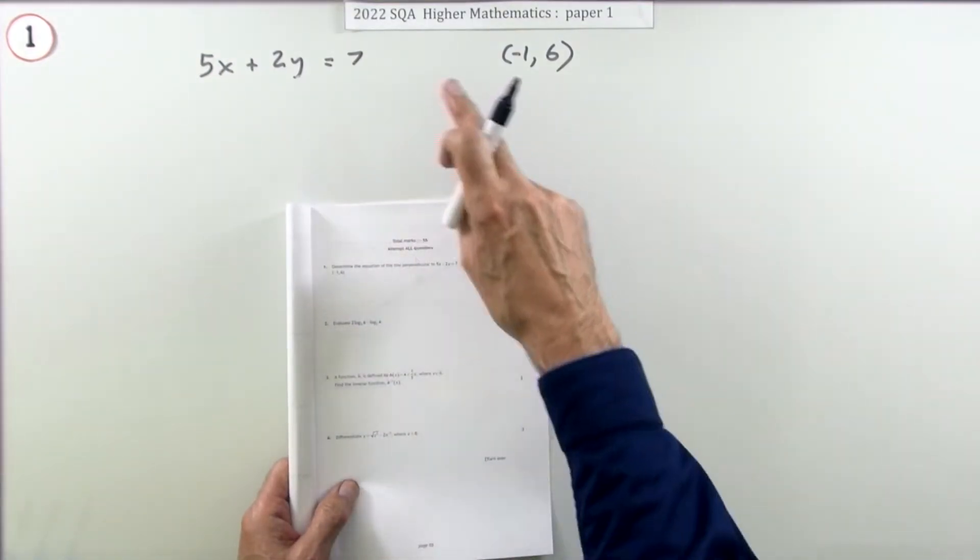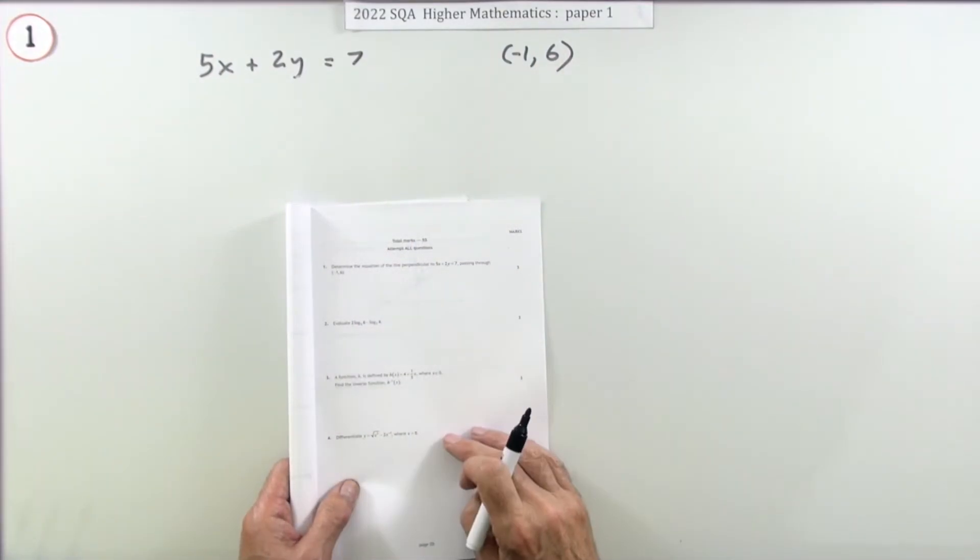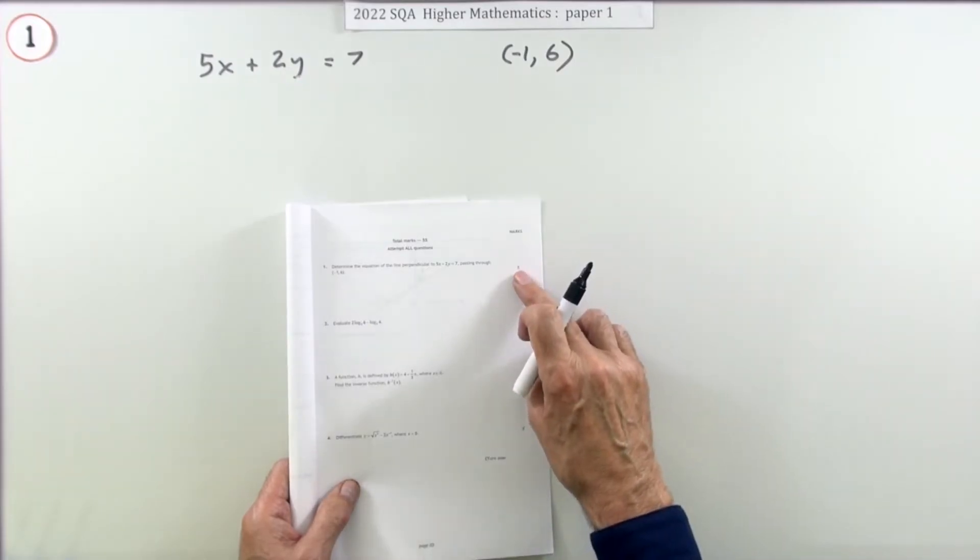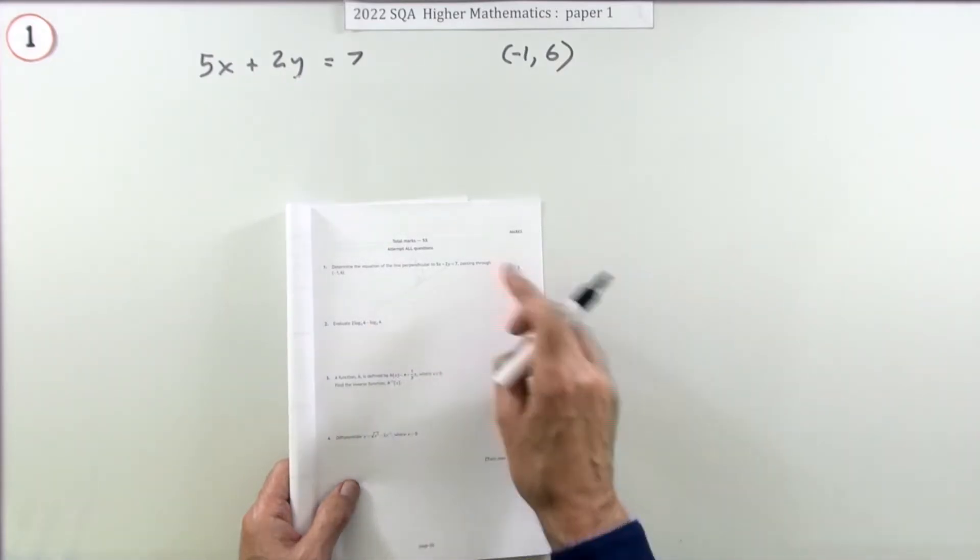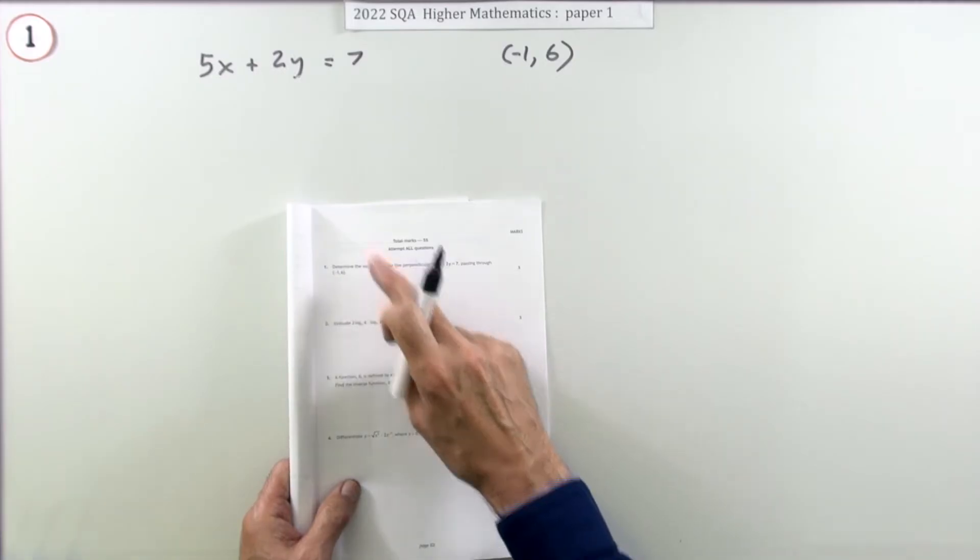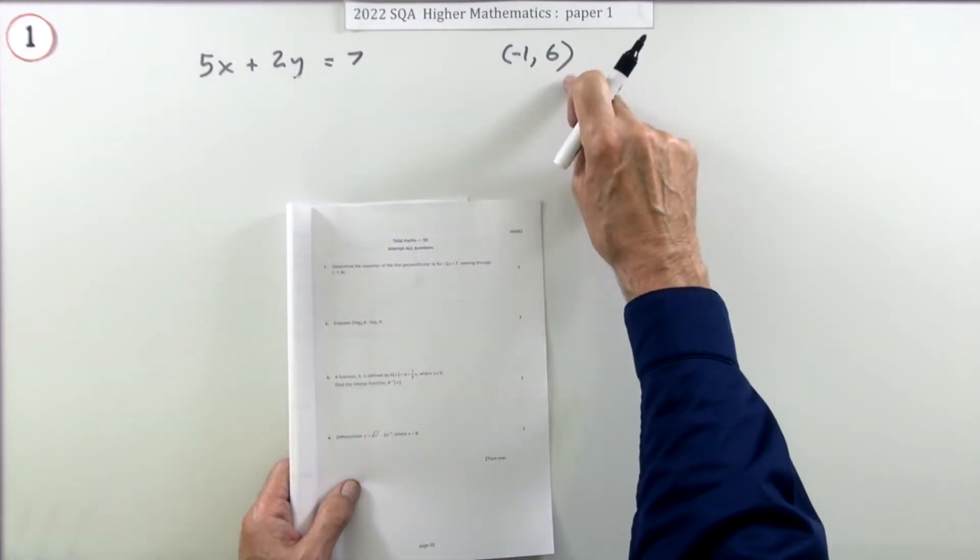Question one, the first question in the 2022 Higher Maths Paper One, just a little three-mark question. The task here to begin with: determine the equation of a line perpendicular to this one but passing through that point.